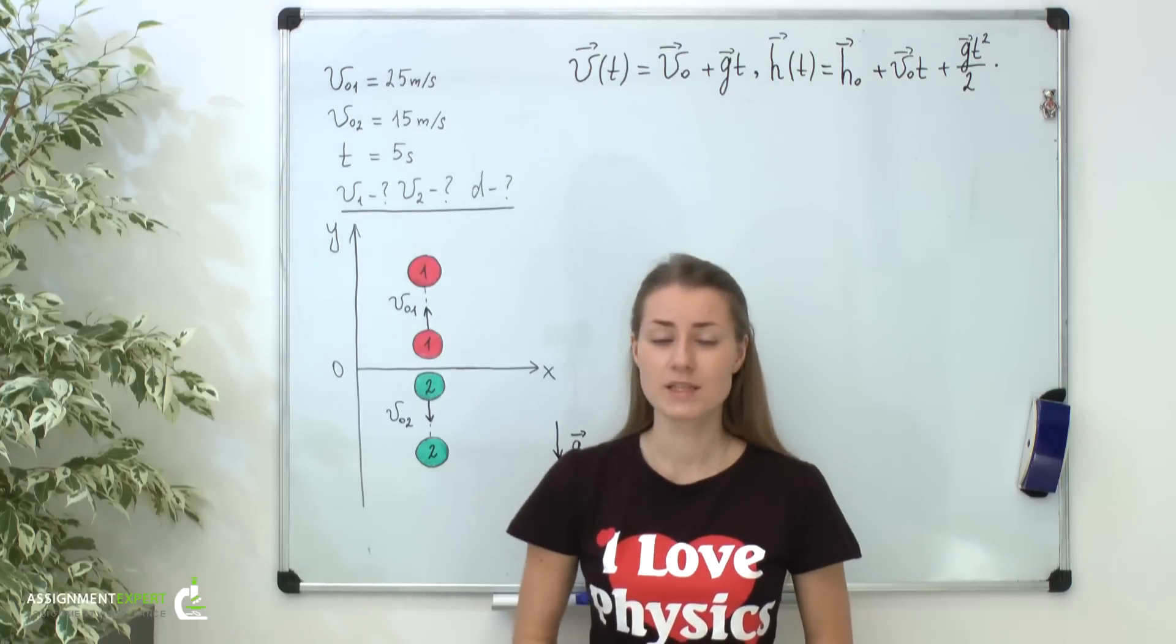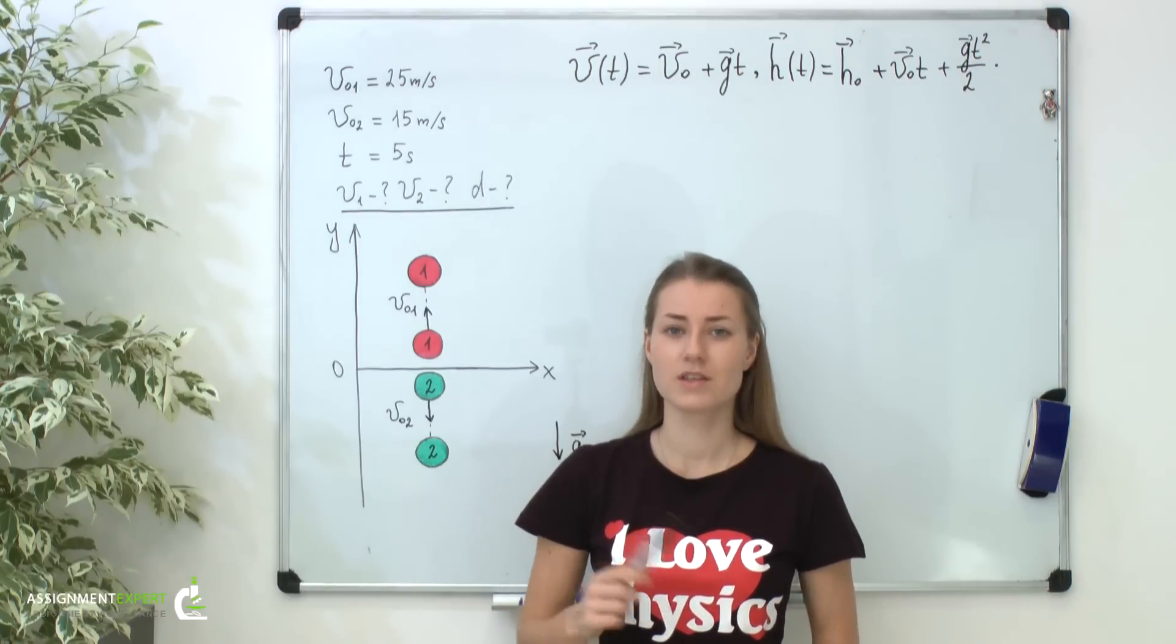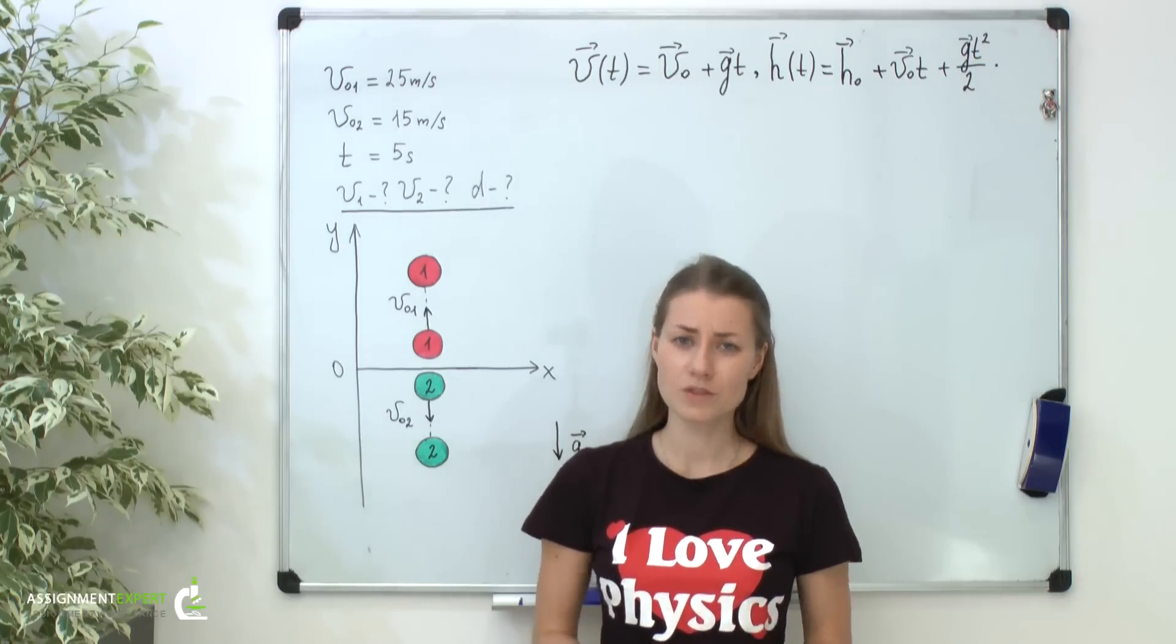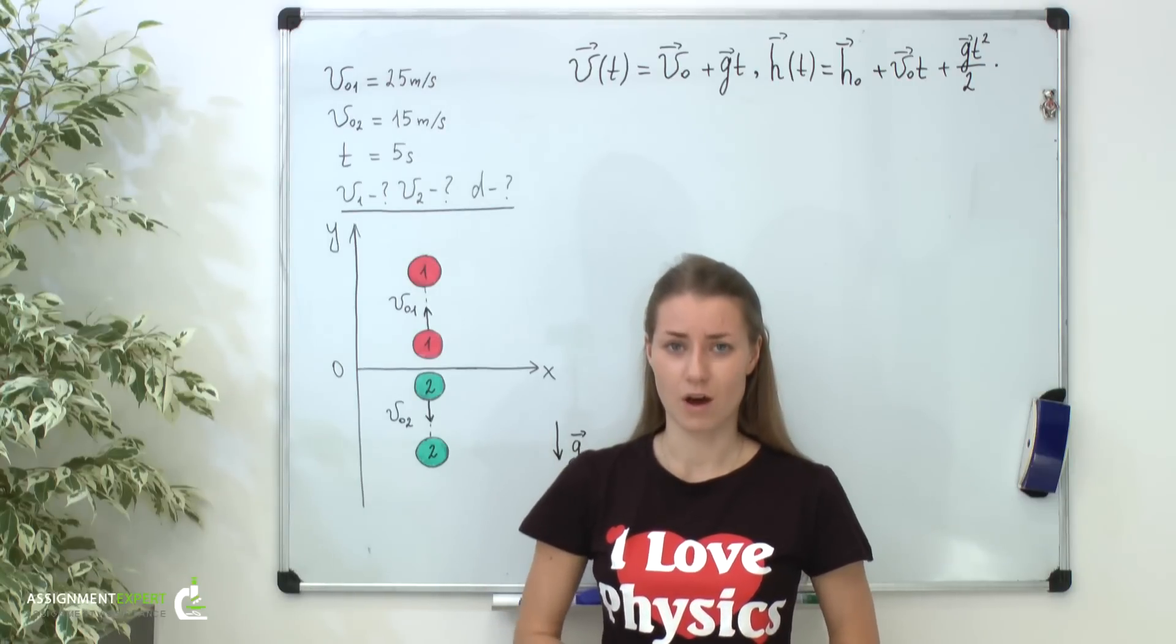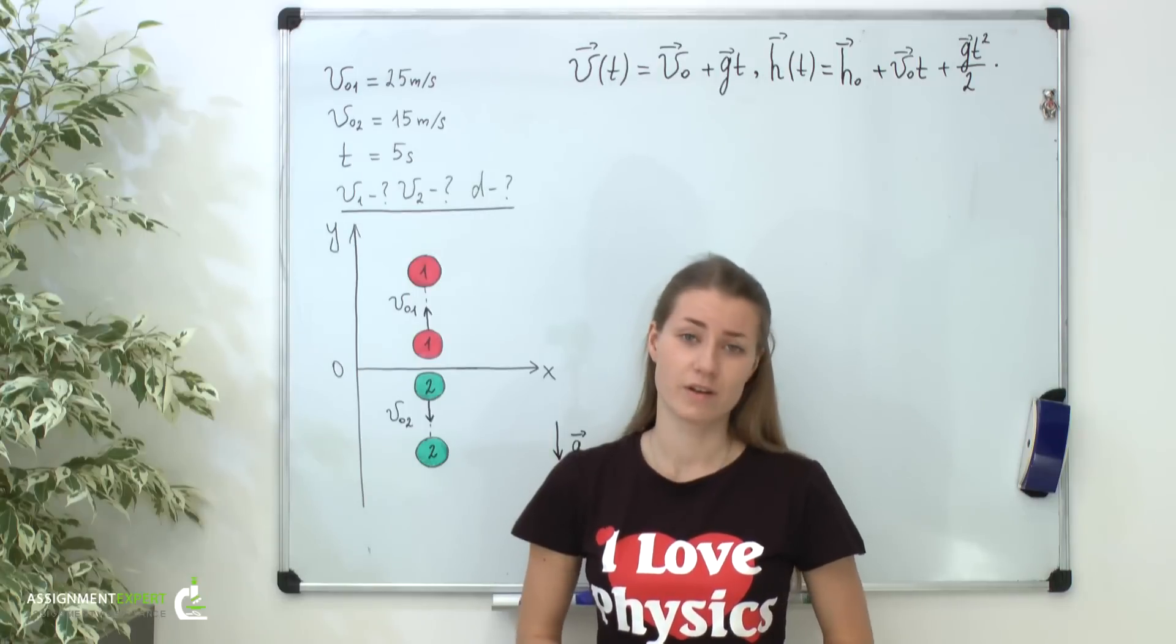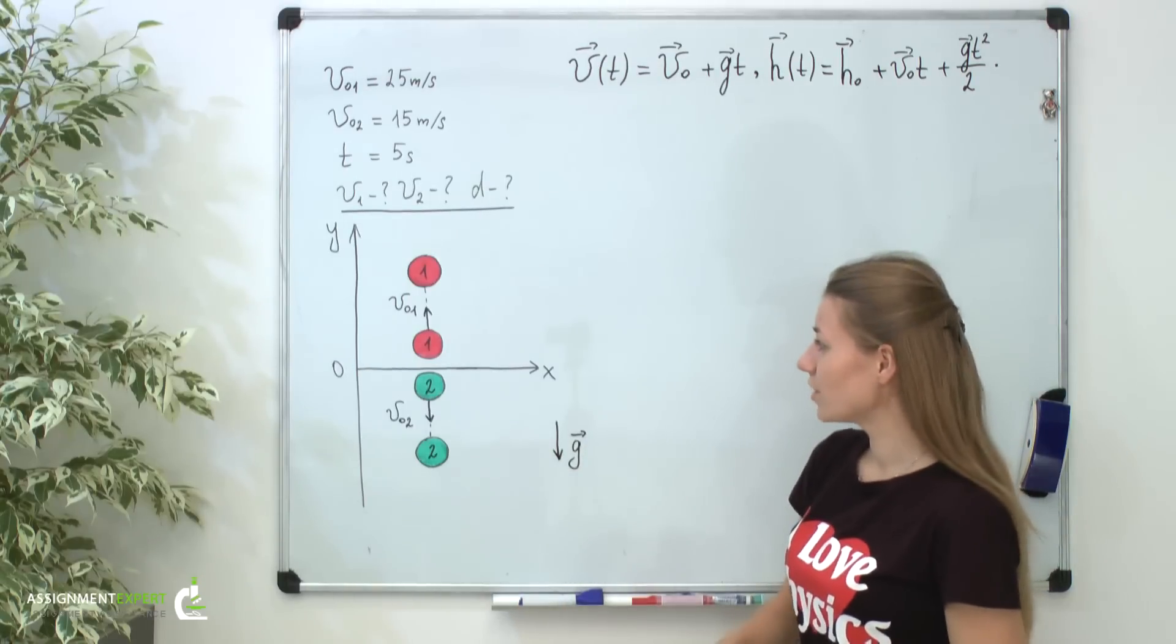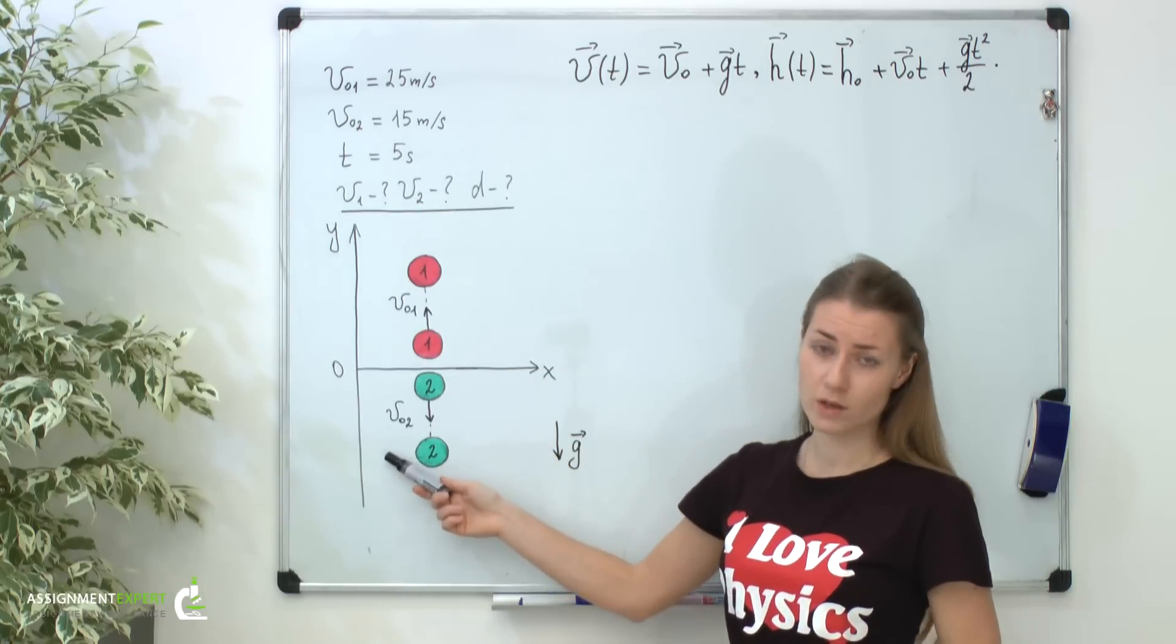To begin with, let's analyze given situation. As we are interested in the dynamics of the ball only after the throw, we absolutely don't care who threw them up and how. It might be a human or a monkey. We don't care. The only important information for us are initial velocities of the balls, V01 and V02.